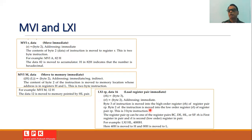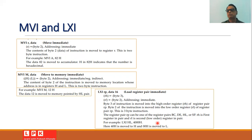The register pair RP used with LXI can be BC, DE, HL, or SP. RH is the first (higher-order) register and RL is the second (lower-order) register in the pair. For example, LXI HL, 4000H moves 40 into register H and 00 into register L.